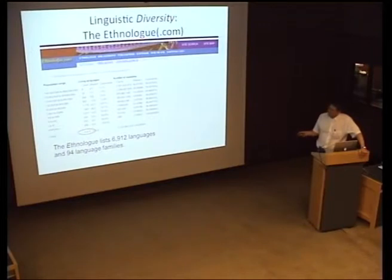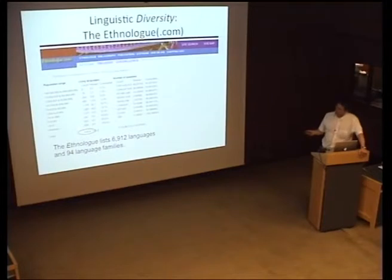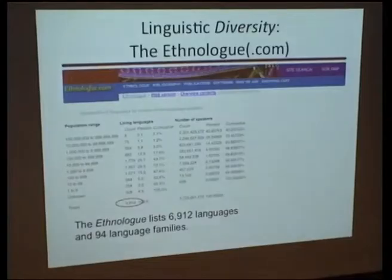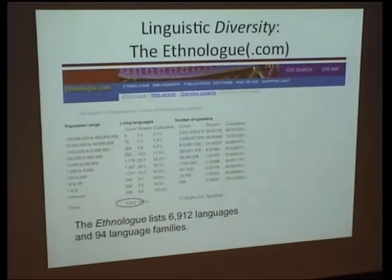Between 10 and 99 speakers, there are about 344 languages. And if you go to the very abundant languages — the ones with between 100 million and about 1 billion speakers — we find out that there are about eight languages. Interestingly, the most abundant number of languages are the ones with an intermediate number of speakers: 1,967 languages have between 1,000 and 10,000 speakers.